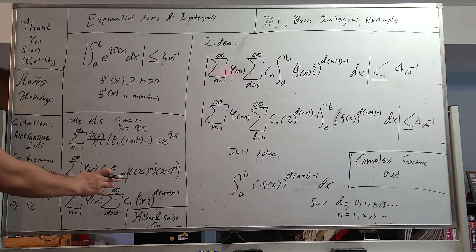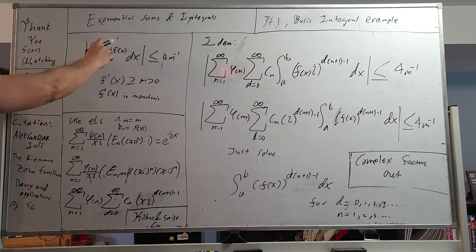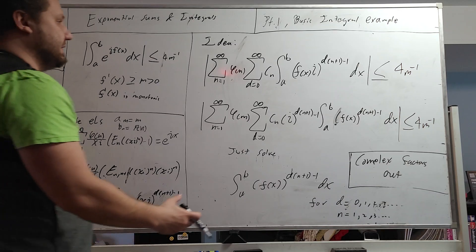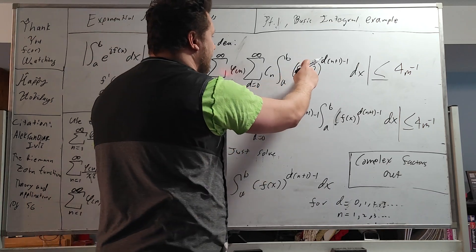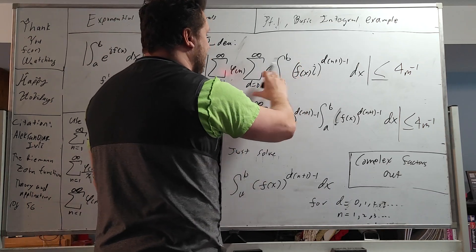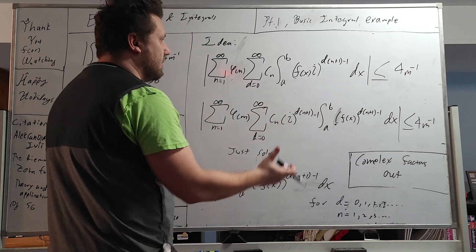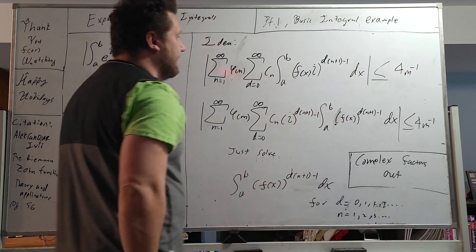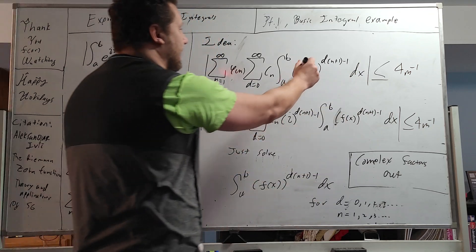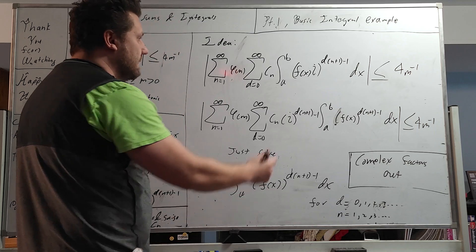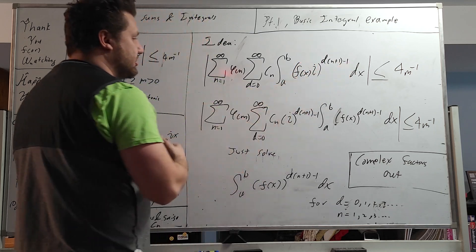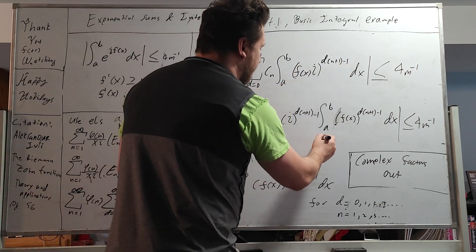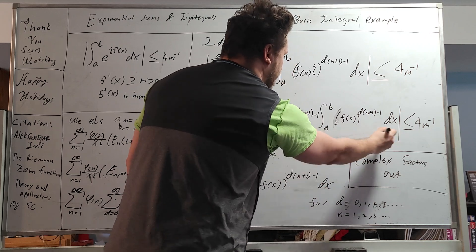And now what we're going to do is we're going to take this representation, and we are going to plug in for the e to the i f of x. And as you can see, you have i f of x, the integral comes in, because it's a definite integral. You have d n plus one, minus one, dx. And now you can easily notice that the i's, the imaginary components, can be just stripped out.